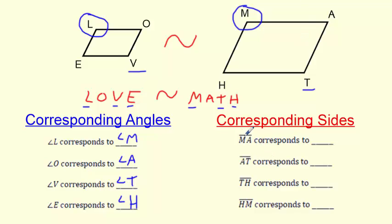Same thing for sides. This little bar up top means this side. If I went from M to A, so from here to here, who does he match? He's going to match L to O. I put a little bar on top. That means the line segment from L to O. A to T matches O to V. T to H to the bottom matches the bottom. V is to E. And then H and M to E and L.